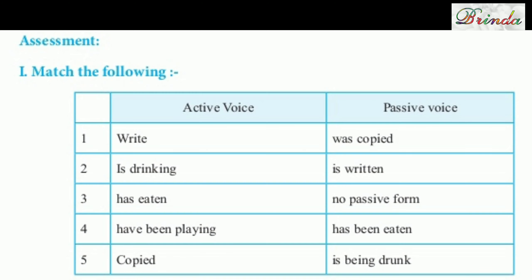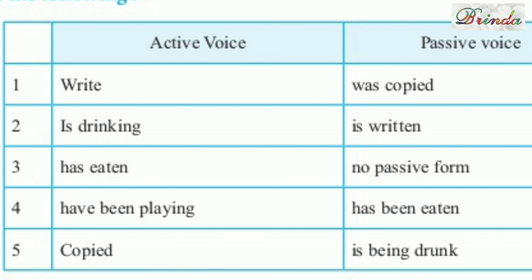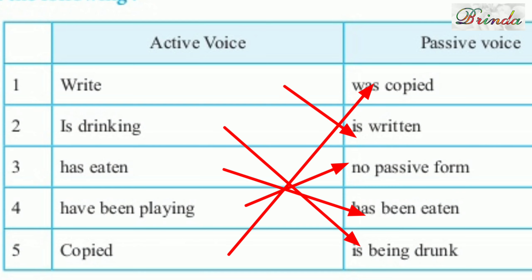Now we will deal with the assessment part. Roman number one — Match the following. You have words in active and passive voice that you must match. 'Write' changes to 'Is written.' 'Is drinking' changes to 'Is being drunk.' 'Has eaten' changes to 'Has been eaten.' 'Have been playing' — there is no passive form for this. 'Copied' changes to 'Was copied.'